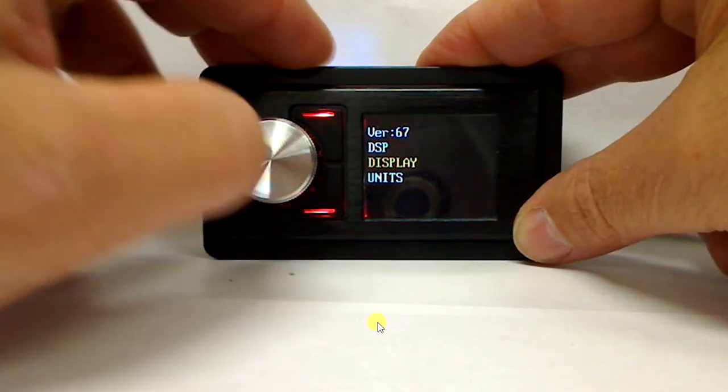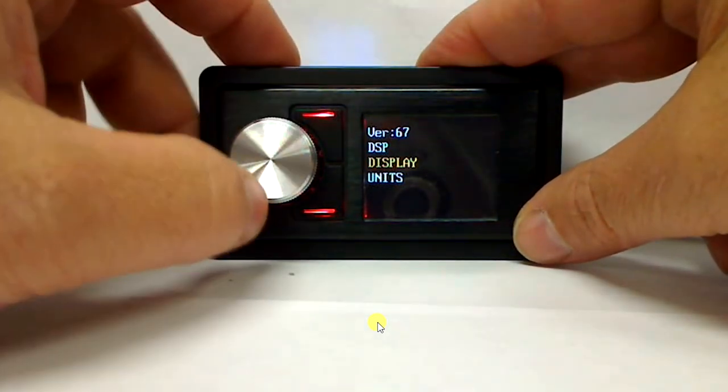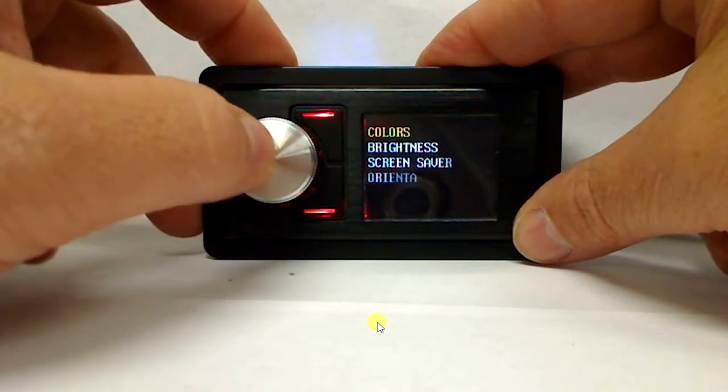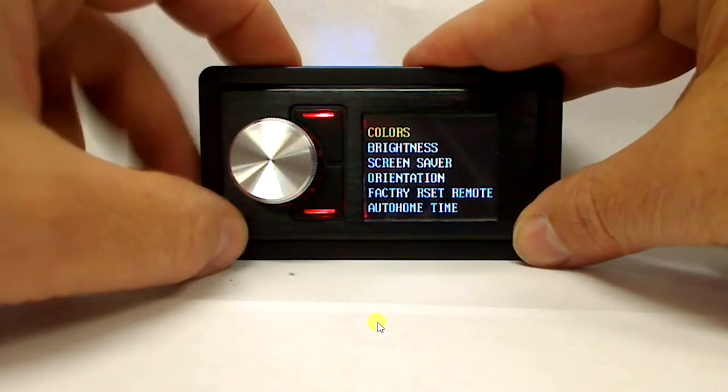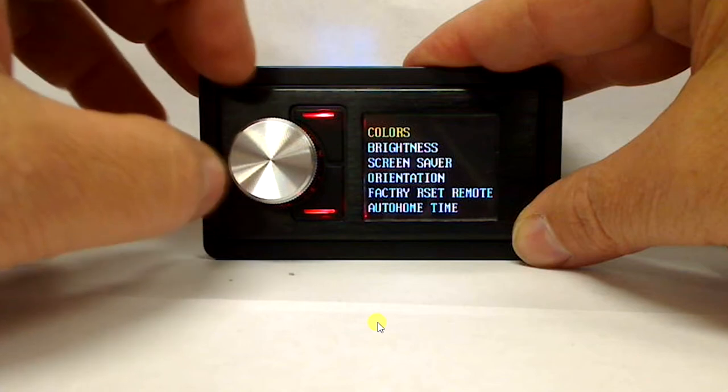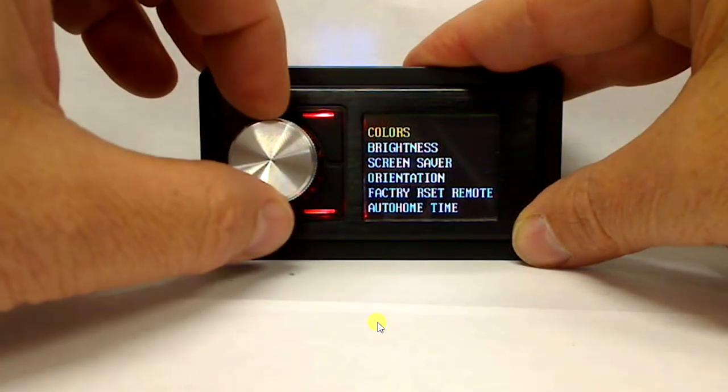Another area that's accessible even if you have restrictive settings on the PSC is display. We come in to display and we've got colors, brightness, screensaver, orientation, factory reset, remote, and auto home time.